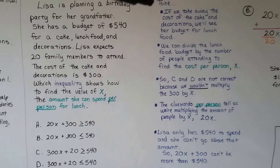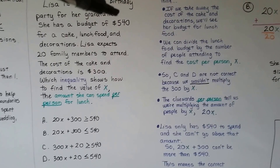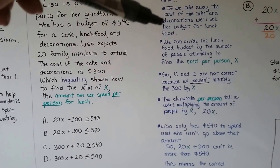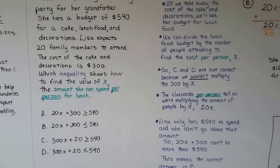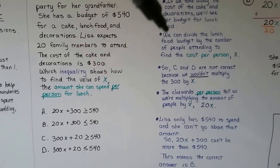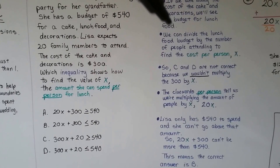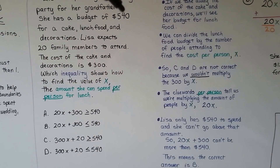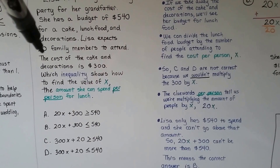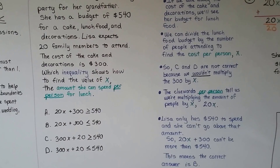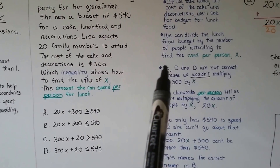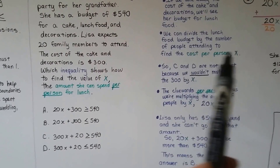If we take away the cost of the cake and decorations — that $300 — from her $540, we'll see her budget for lunch food. We'll see how much is left that she can spend on lunch, and we can divide that lunch food budget by the number of people attending. So if we take $300 away and divide the difference by the 20 family members, that tells us how much per person.